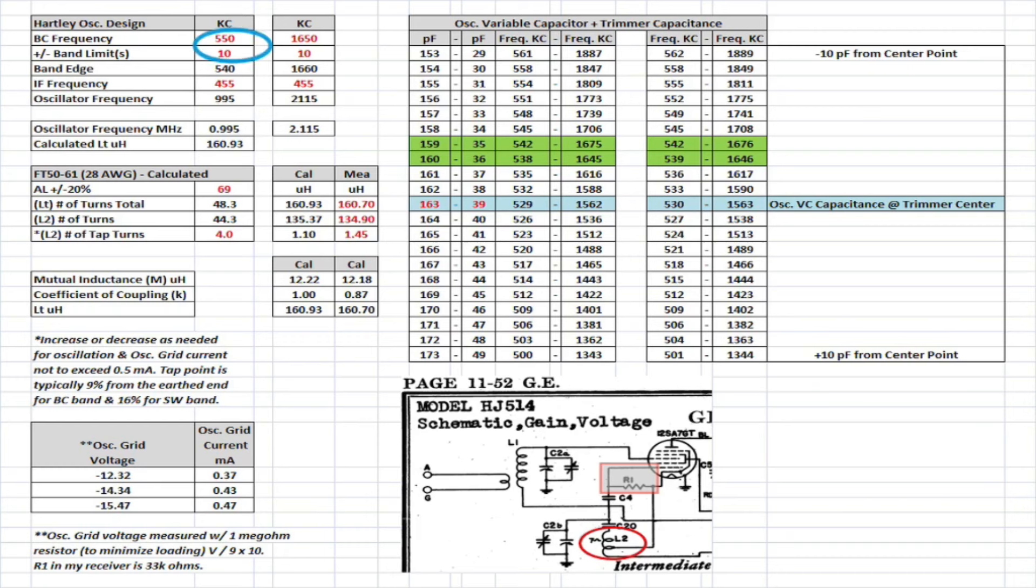So starting up here at the top, you'll notice I've got the frequency range of the receiver in kilocycles or kilohertz, 550 to 1650. I've put a band limit to go 10 kilohertz below that and 10 kilohertz above. Then you can see the IF frequency for this particular receiver is 455 kilohertz, and I've just converted the oscillator frequency from kilohertz back to megahertz for the simple calculations.